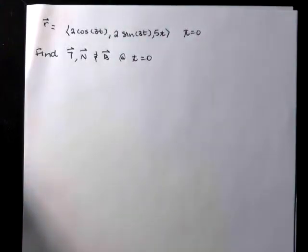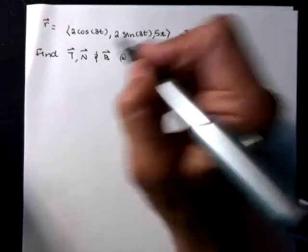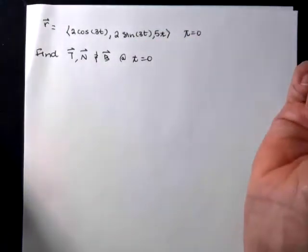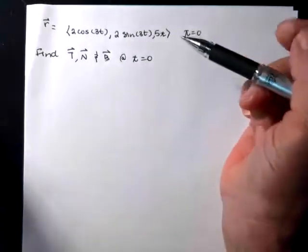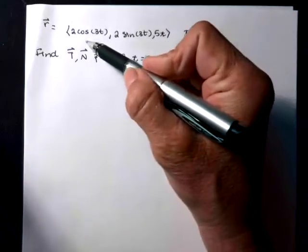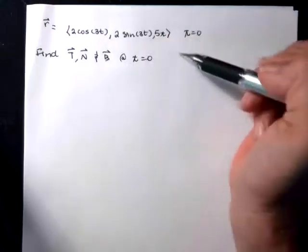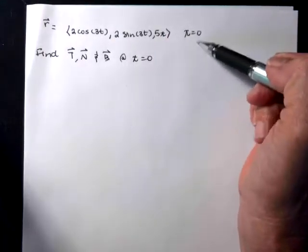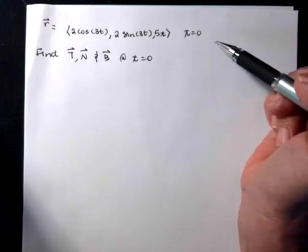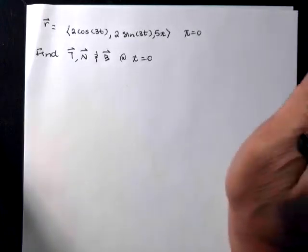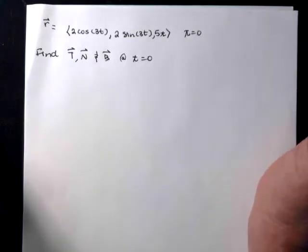Okay, so here's an example for finding the T, N, and B vectors given an R vector. So our R vector is 2 cosine 3t, 2 sine 3t, and 5t - those are x, y, and z components. And we're going to find it at t equals 0. Now, when we're given this specific t value, that's going to make our life a whole lot easier.